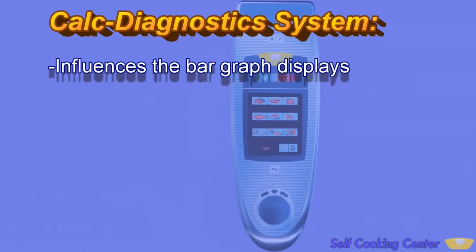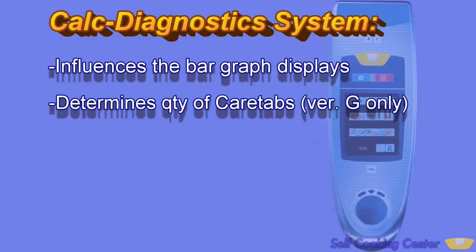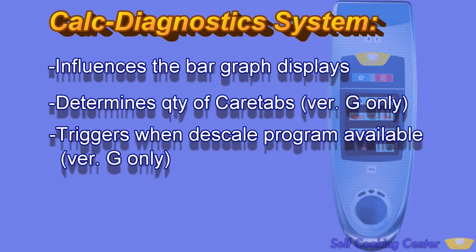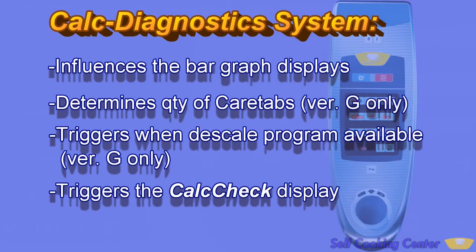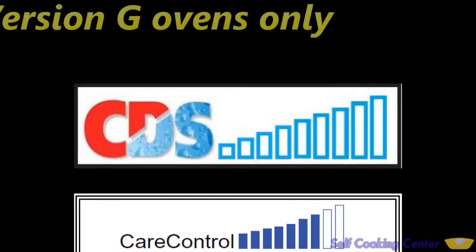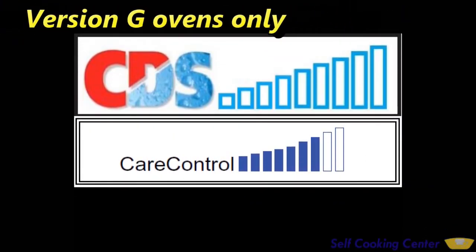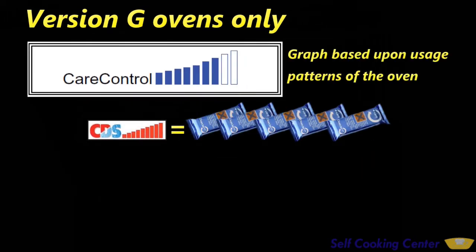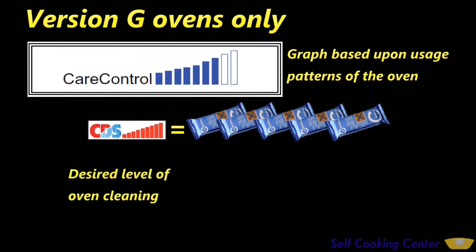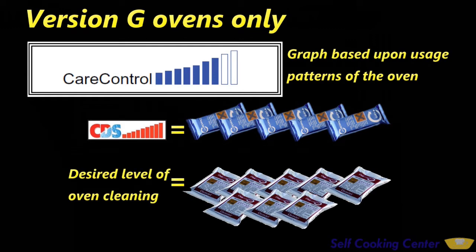The Calc Diagnostic System doesn't just give us a bar graph to read. On the version G oven, it calculates how many care tabs to use, makes a built-in descale program available to technicians, and triggers the calc check display. On the version G oven, there's not just a CDS graph — there's also a care control graph. CDS does have some behind-the-scenes influence by telling how many care tabs to use, which is based upon how much scale is in the steam generator. But understand that the care control graph is separate from the CDS graph, and its display is based upon usage patterns of the oven — such as cooking modes, times, and temperatures. So the care control graph cannot be used as an indicator of scale buildup.